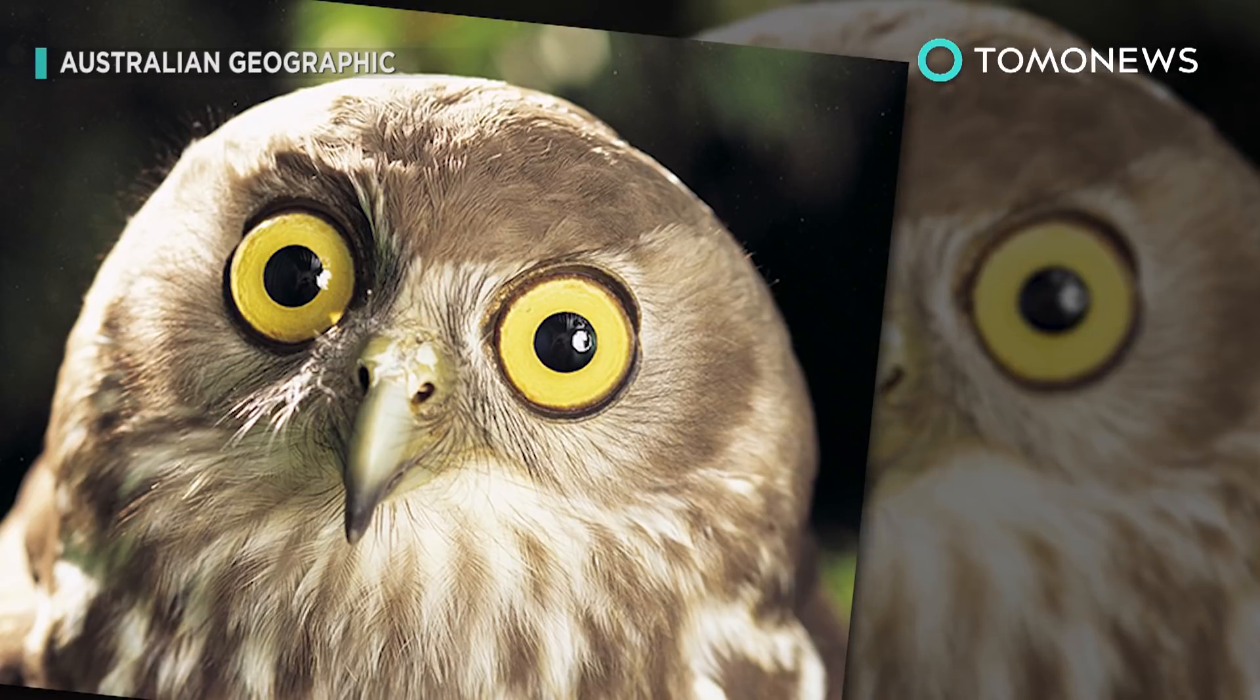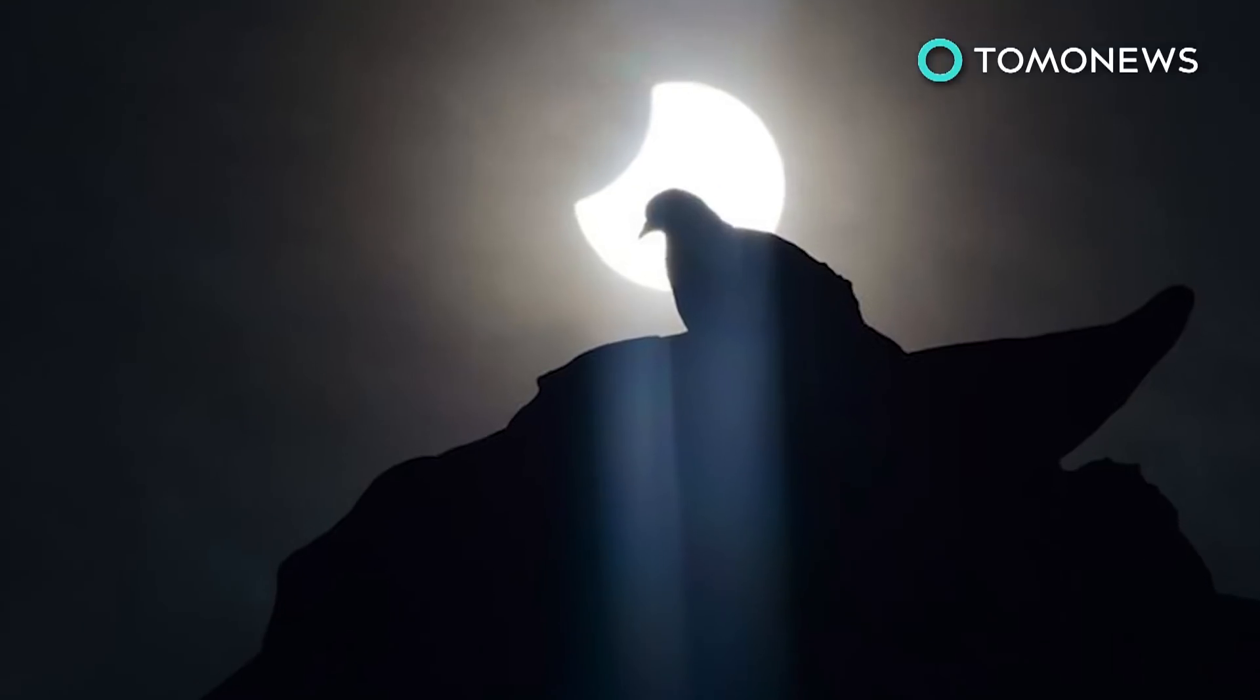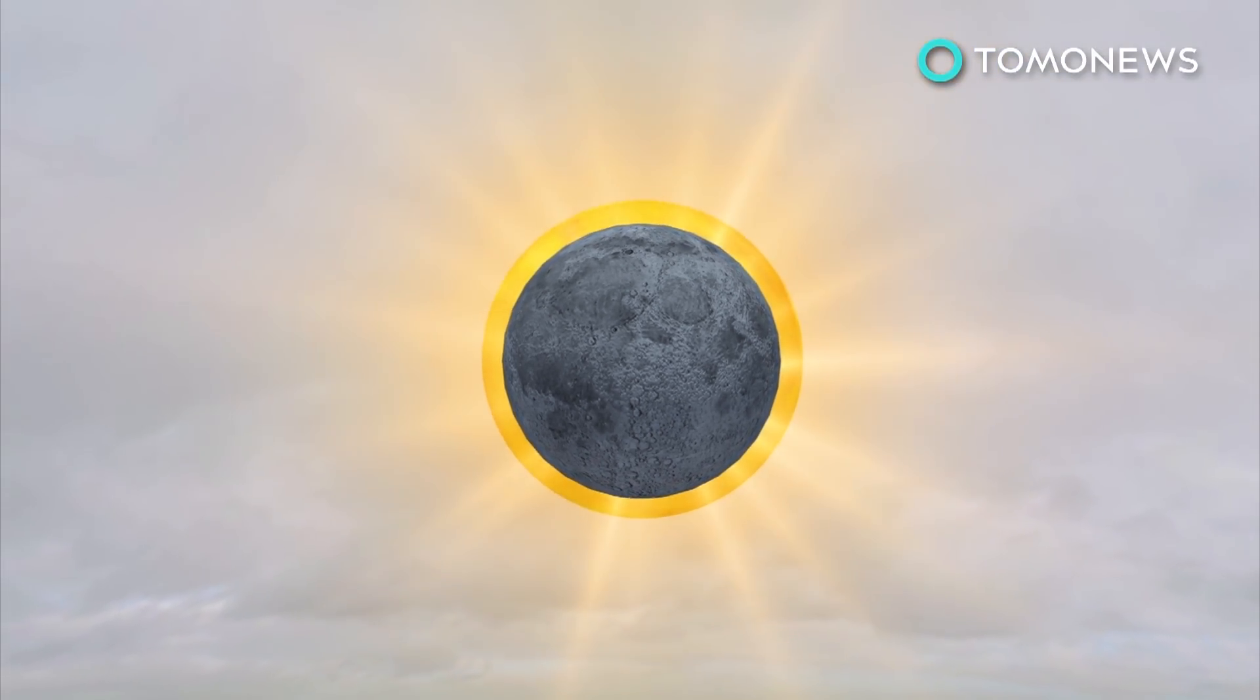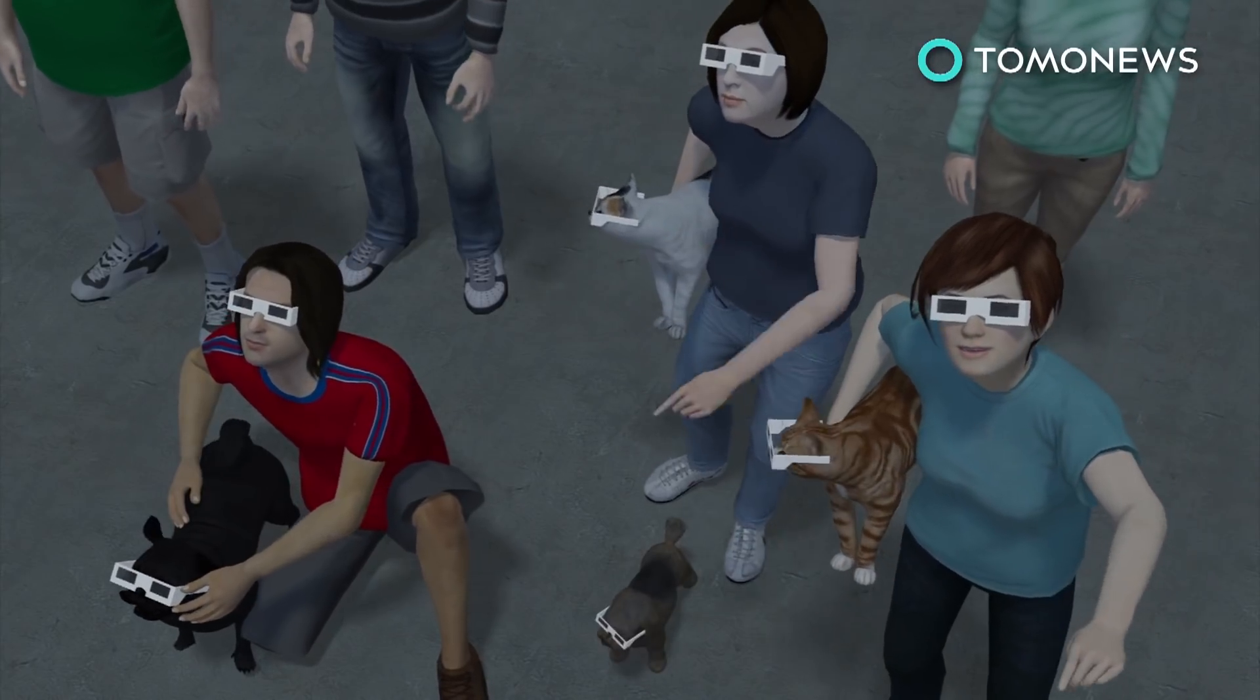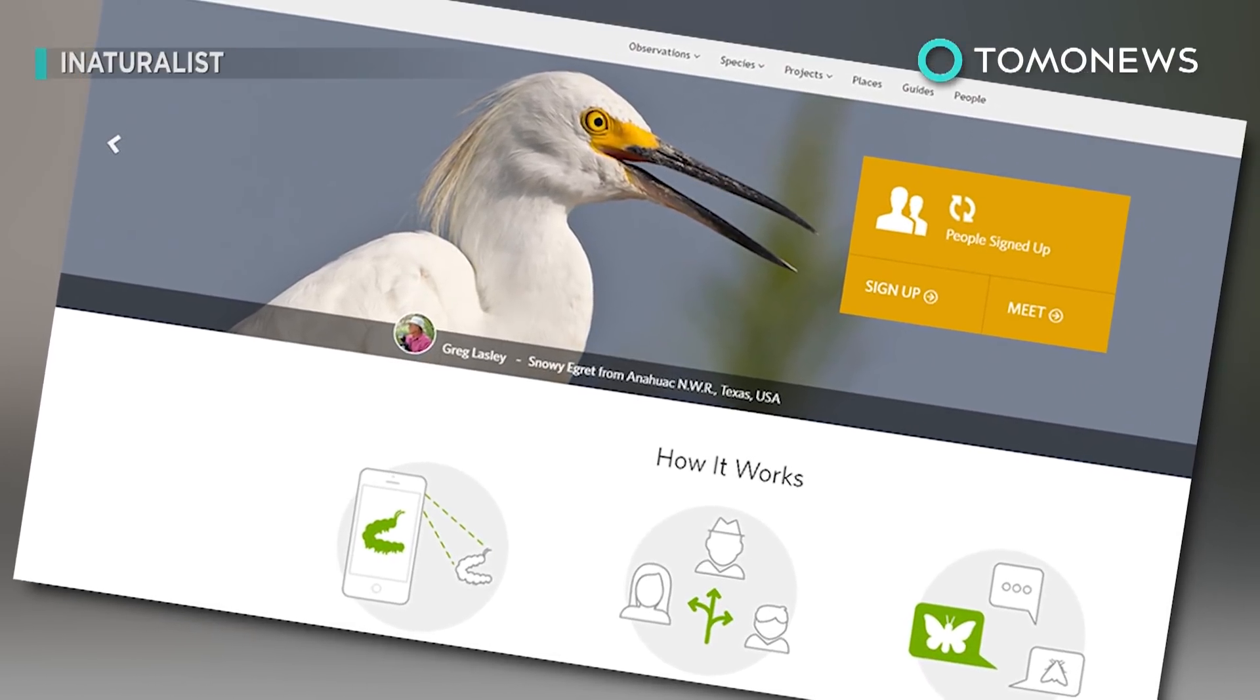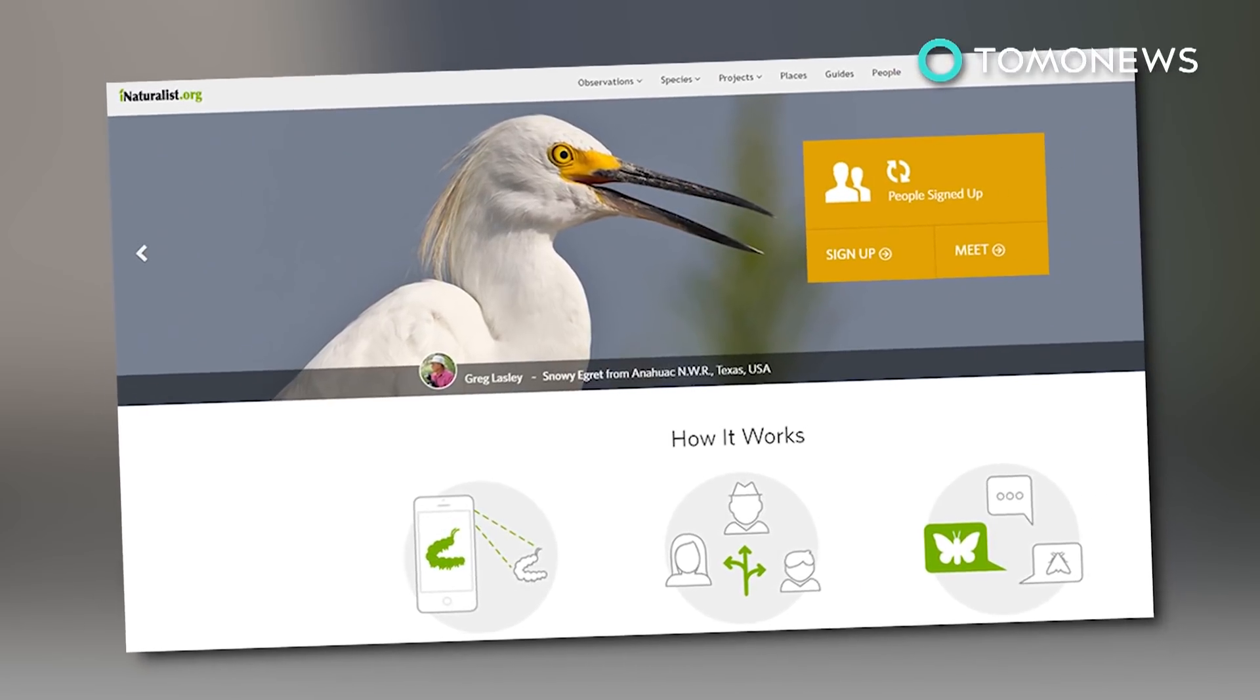Researchers at the California Academy of Sciences are asking citizens to take part in an experiment by reporting animal behavior during the Great American Eclipse on August 21st. They want to know what all kinds of animals get up to, including domesticated ones. For more info, check out the iNaturalist app on the App Store or Google Play, or go to www.inaturalist.org.